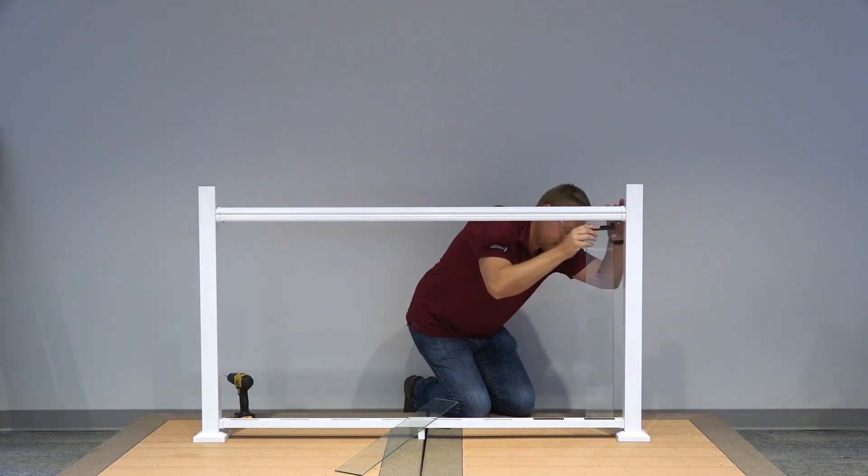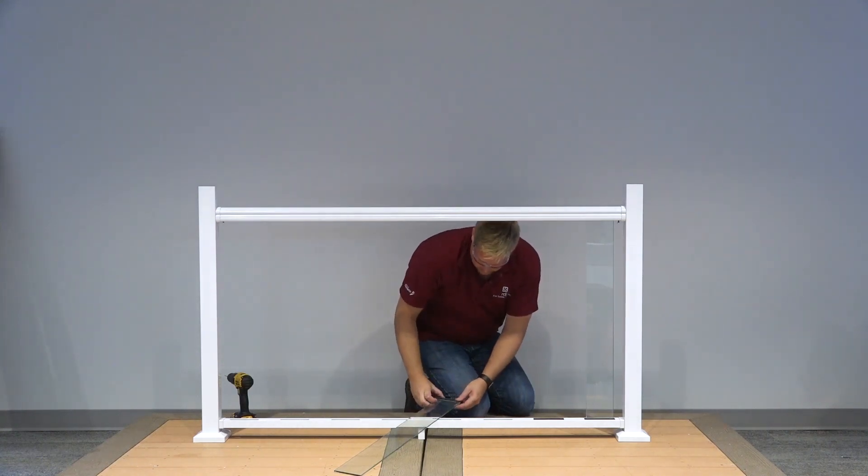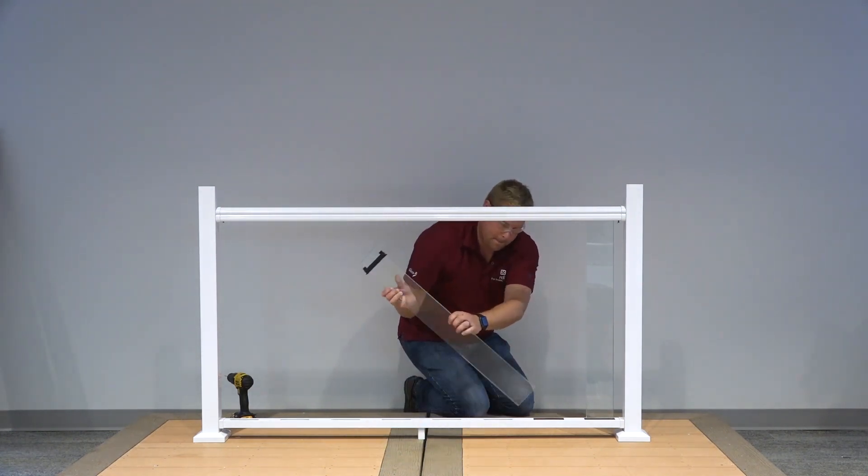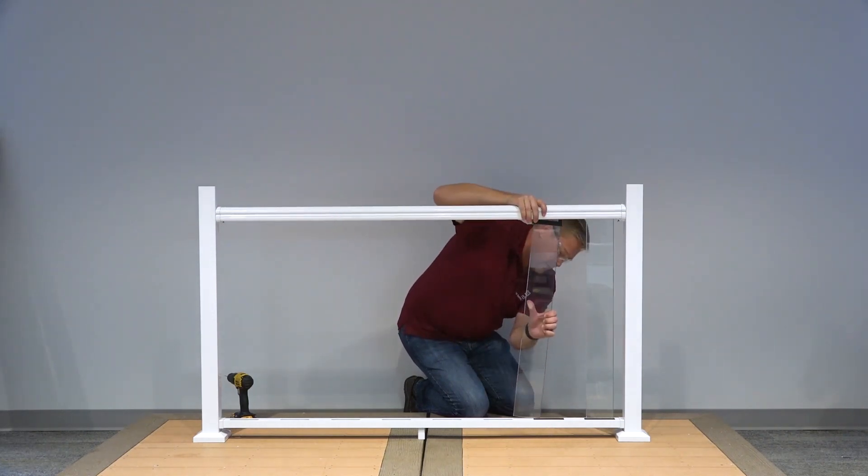It may be helpful to loosen the screws on the top rail installed in the previous step to slide the glass slat into place. Just remember to re-tighten these screws to secure the top rail. Then, slide the top glass gasket up to fit snugly into the top beam. Repeat for remaining glass slats.